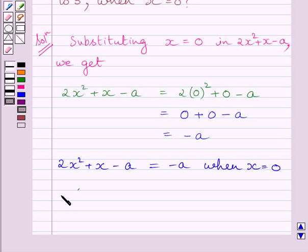We are also given that the value of 2x squared plus x minus A is equal to 5 when x is equal to 0.